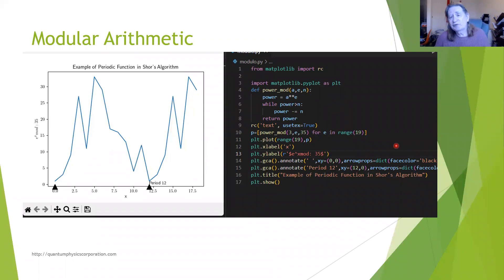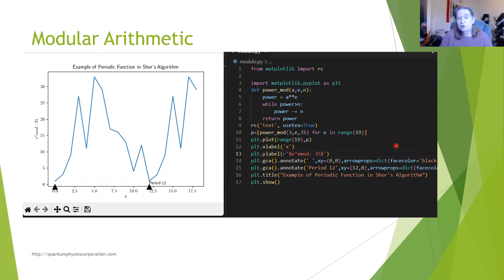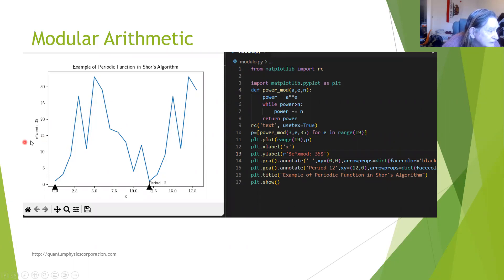Shor's algorithm is based on modular arithmetic, where you divide by a reference number called the modulus and look at the remainder. Shor's algorithm is based on finding periods. For example, 3 to the x mod 35: as x varies as an integer, this curve repeats. If you go from 0 to 12 it starts over, so 12 is the period.